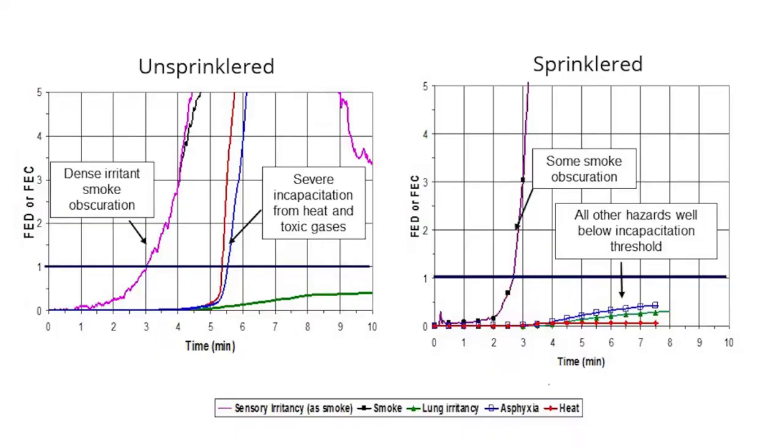If we fail to extinguish the fire, at least we're controlling it, which means that the mass loss rate and the rate of plume development is greatly reduced, and the heat release rate is greatly reduced compared to what we would have had without the sprinkler system.